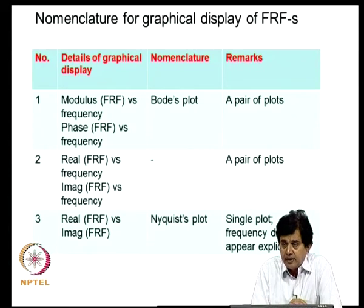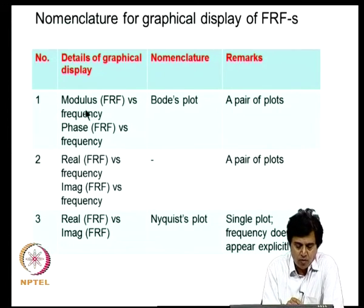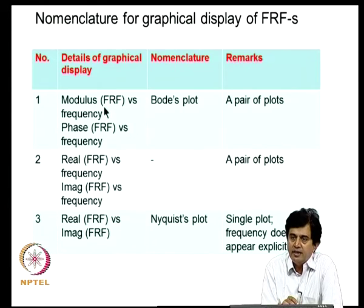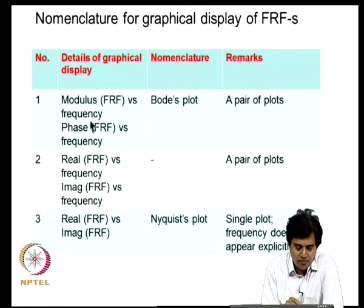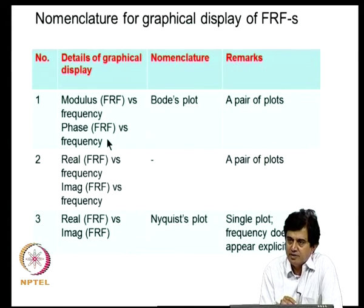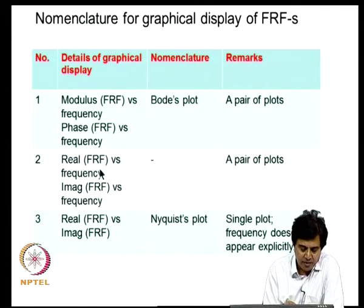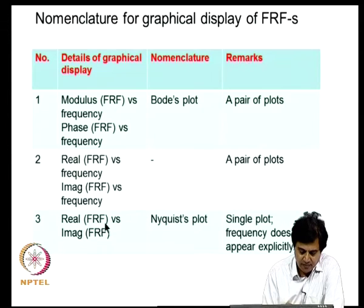There are different practices for displaying frequency response functions. Plotting the modulus and phase of the FRF (receptance, mobility, or accelerance) versus frequency is known as a Bode plot — a pair of plots showing amplitude and phase spectra, where the word spectrum denotes any plot with frequency on the x-axis. Plotting real and imaginary parts versus frequency has no specific name, while plotting the real part versus the imaginary part of the FRF is known as a Nyquist plot — a single plot where frequency does not appear explicitly.